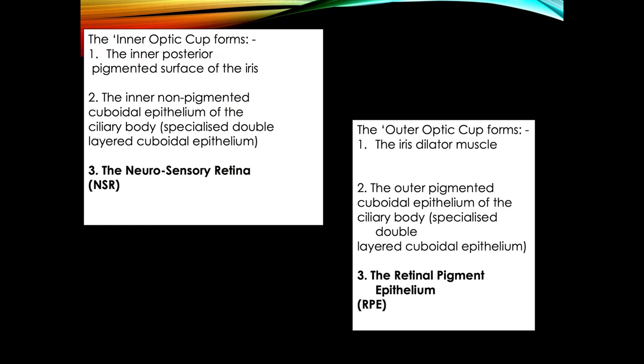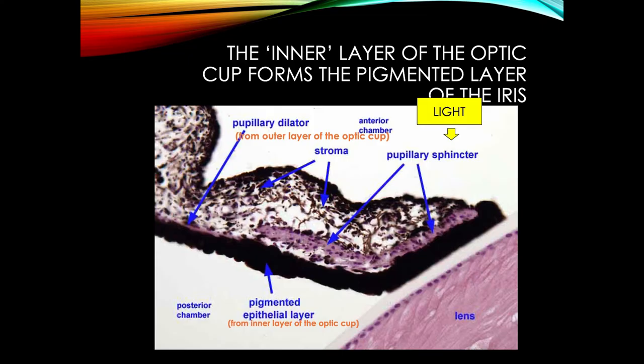Summary: think of that big cup and the two layers present there — automatically if you draw it, you'll include the potential space. The inner aspect forms the neurosensory retina — that's the bulk of the retina — and the outer aspect is the retinal pigment epithelium. If you can also remember the bits of the iris and the ciliary body, so much the better, but understanding that will help us immensely.